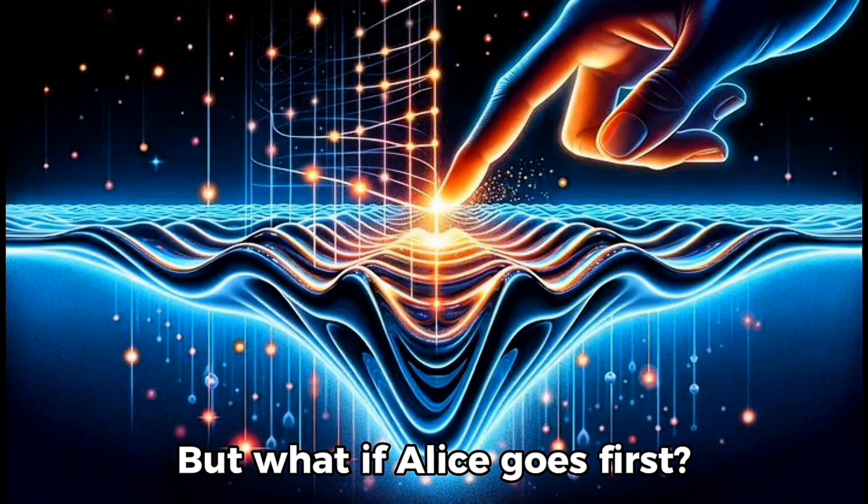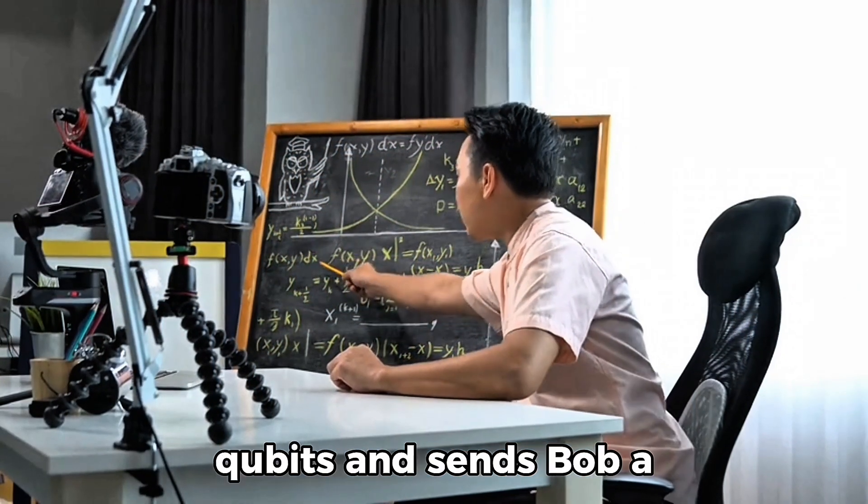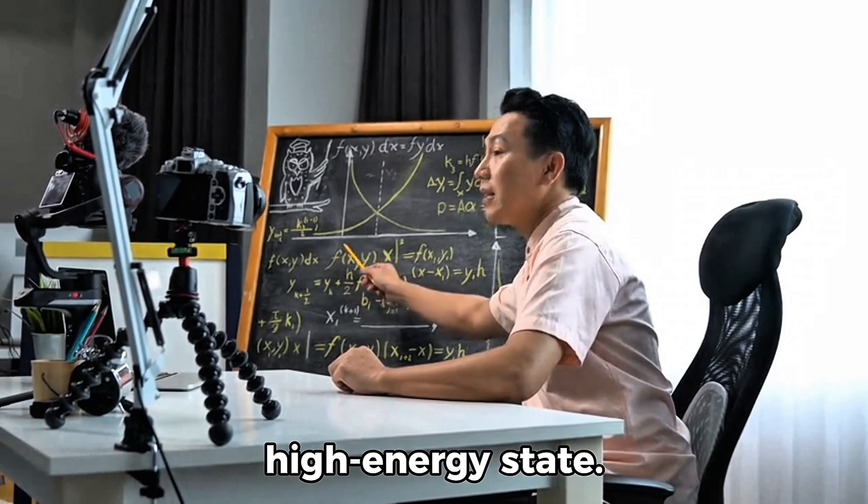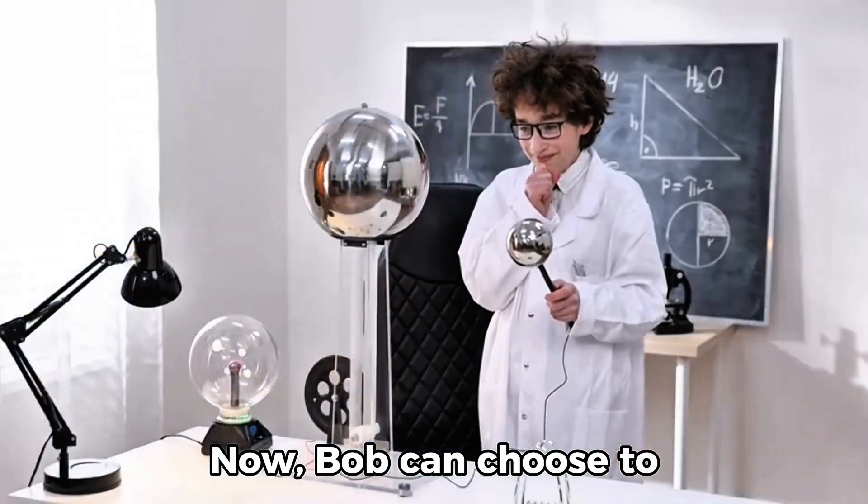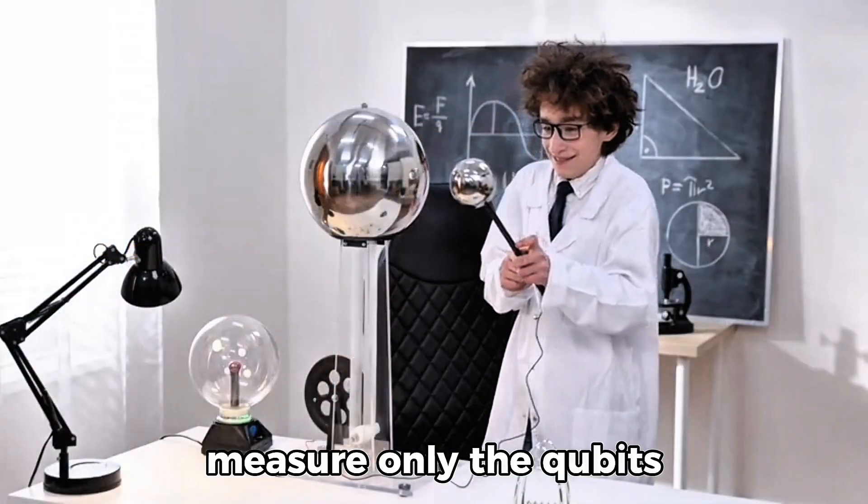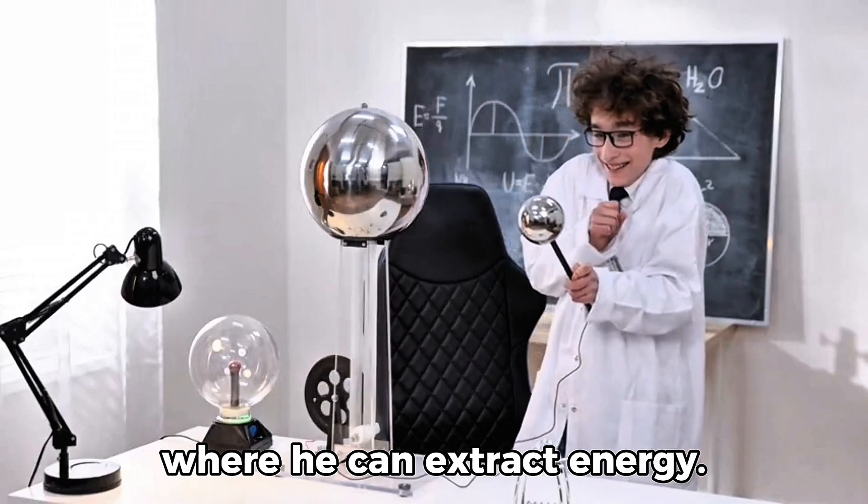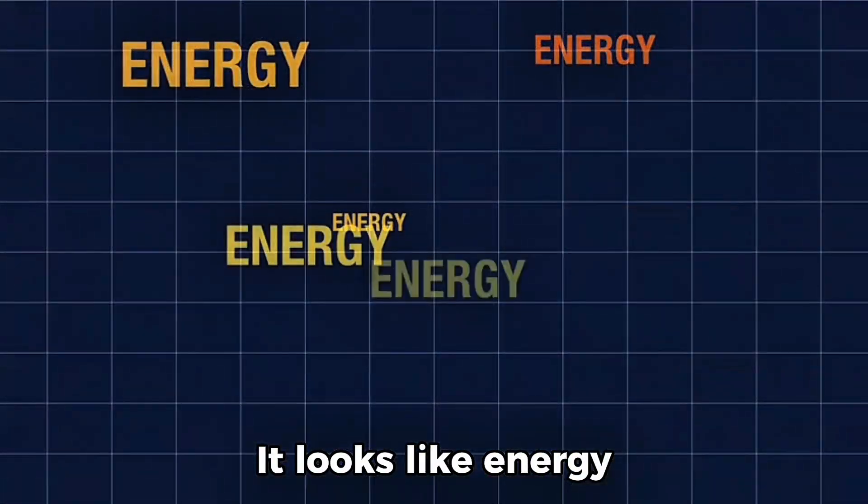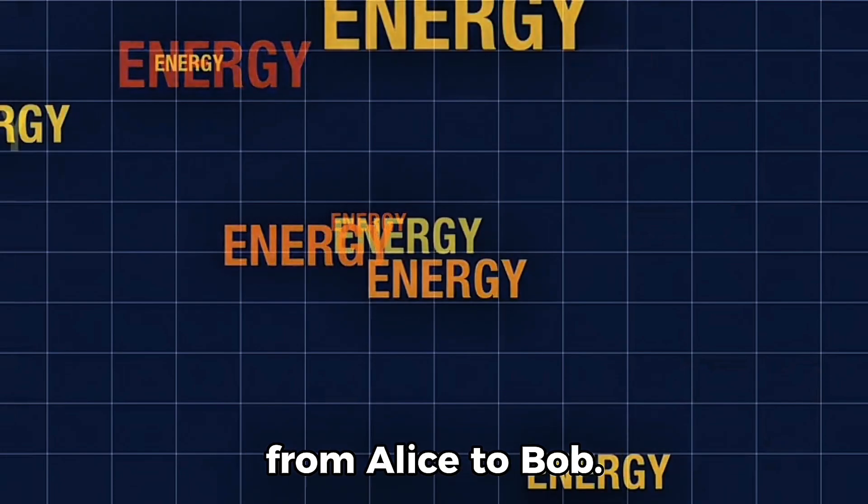But what if Alice goes first? She measures all ten qubits and sends Bob a message telling him which ones are in the high-energy state. Now, Bob can choose to measure only the qubits where he can extract energy. Voila, Bob gains energy. From where?